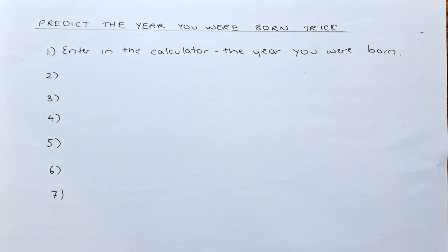First, you need to enter in your calculator the year you were born. If you were born in 1968, just key in 1968. If you were born in 2005, then key in 2005.